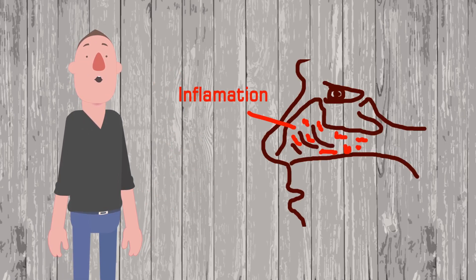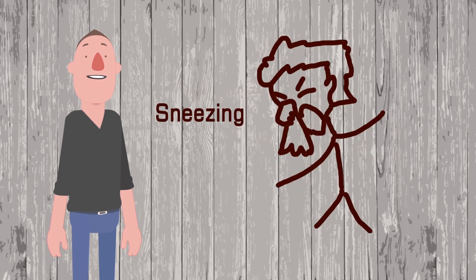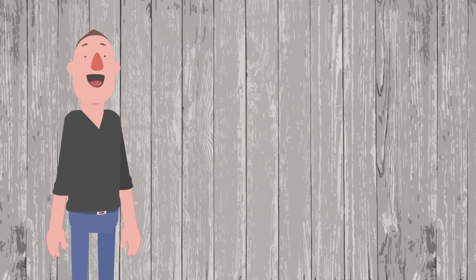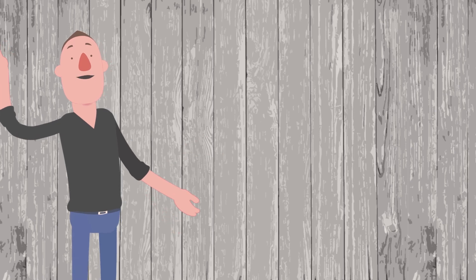Rhinitis is an inflammation of the mucous membranes of the nose and is characterized by sneezing, itchy nose, itchy eyes, watery rhinorrhea, nasal congestion, and sometimes nonproductive cough.